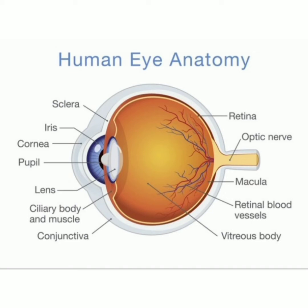Light passes through the cornea and aqueous humor through an opening called the pupil. The size of the pupil is determined by the iris, the contractile ring associated with eye color. As the pupil dilates — gets bigger — more light enters the eye.